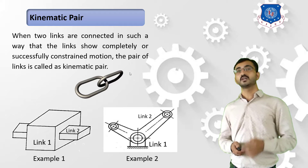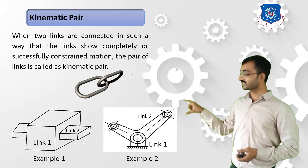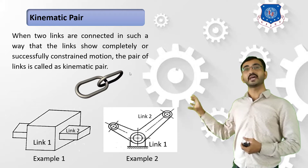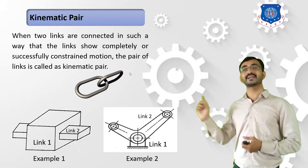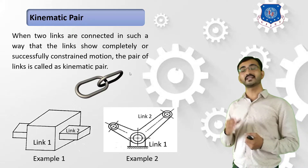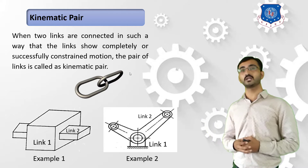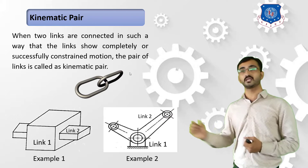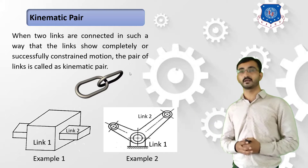Let's consider one example. In the first example, you can refer to the fixed block. Link number one is a fixed block and link number two will reciprocate inside this fixed block. We are able to understand that in whatever direction we give motion to link number two, it will be moving in a pre-definite direction as reciprocating motion. So we can term it as a Kinematic Pair.